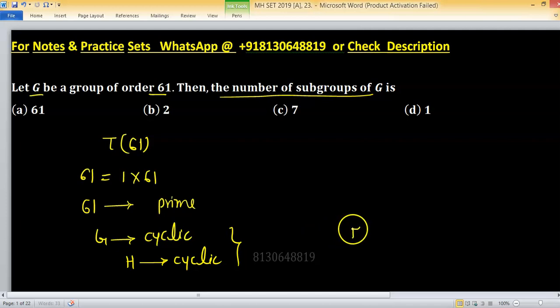Because if 2 divides 12, it doesn't mean there exists a subgroup H such that the order of H equals 2. But when the group is cyclic, for each divisor there exists a subgroup. The divisors of 61 are 1 and 61.